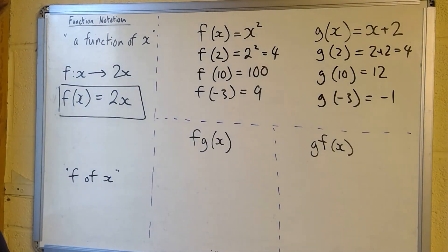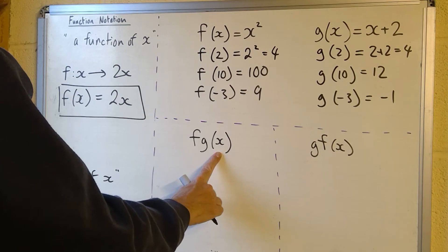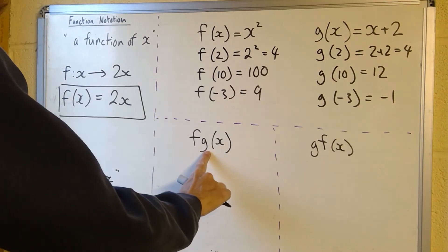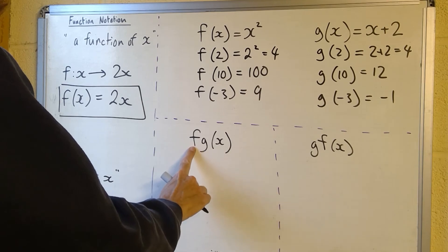There are extra things we can do called composite functions and inverse functions. I'm just going to briefly touch on composite functions here. So if we have something like f of g of x, what that means is you do the g function first. You start with the one closest to the x and then do the f function on the output from the g function.